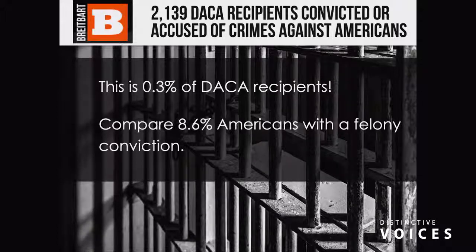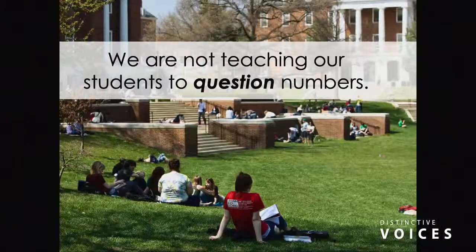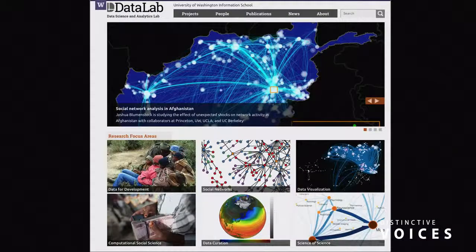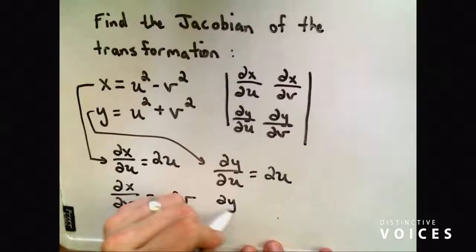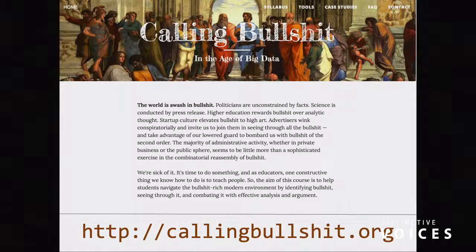Breitbart wasn't lying on that part, but they sure were presenting it in a scary way, given that 8.6% of Americans are convicted with some sort of felony. So the thing that started this project — something Carl and I went back and forth on for years — is we just didn't think we're teaching students to question numbers like we have them question other forms of communication. This has now moved into work with librarians and journalists and educators in high school. A lot of this comes from work in what we co-founded and co-directed called the Data Lab, with around 15 PhD students and post-docs.